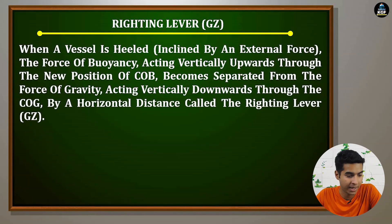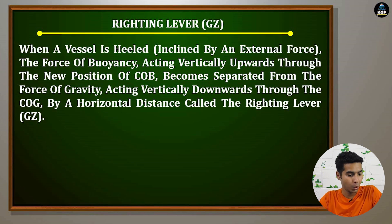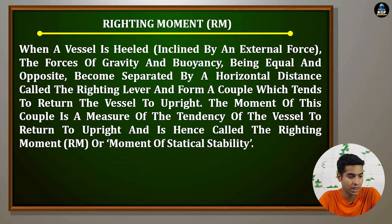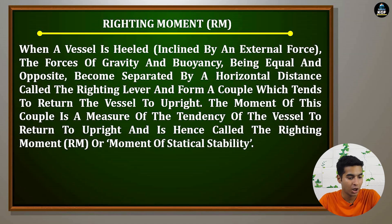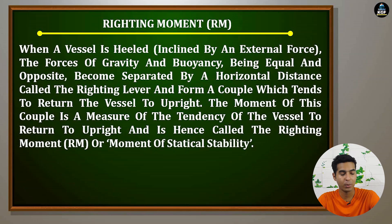Righting lever stands for GZ. When a vessel is heeled — inclined by an external force — the force of buoyancy acting vertically upwards through the new position of COB becomes separated from the force of gravity acting vertically downwards through the COG by a horizontal distance called the righting lever GZ. The forces of gravity and buoyancy being equal and opposite become separated by this horizontal distance GZ and form a couple which tends to return the vessel to upright. The moment of this couple is a measure of the tendency of the vessel to return to the upright and is called the righting moment, or the moment of statical stability.